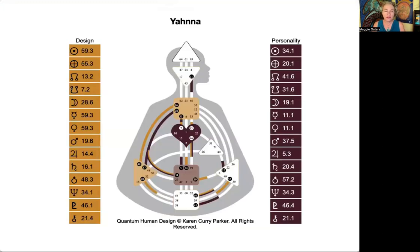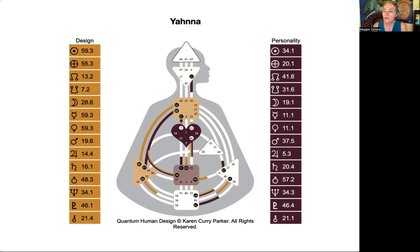When you look at a mandala, you can identify particularly important gates because there's more than one planet there, or a planet appears there twice — which happens a lot with outer planets. We're going to see a bunch of those examples today. All right, so we're going to start with our manifesting generators. Who can tell me what makes this person a manifesting generator — just pop it in the chat.